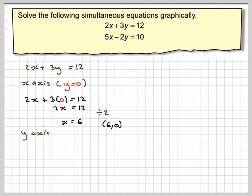For the y-axis, x equals 0. So we'll rewrite this down and write 2 times 0, because x is now 0, plus 3 times y equals 12. 2 times 0 is 0, so we end up with 3y equals 12.